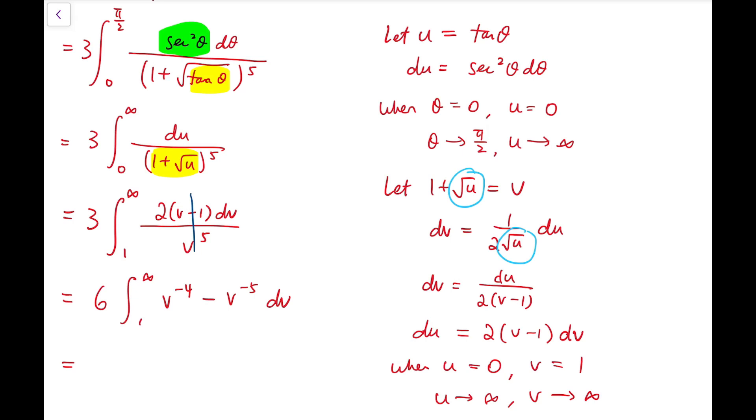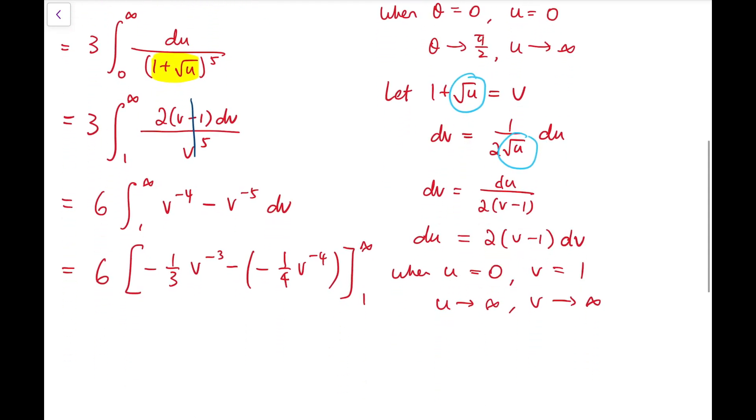So, integrating, I have this integral to become 6 times [(-1/3)v^(-3) - (-1/4)v^(-4)]. And then, I'm going to put our upper and lower limits inside this integrated function. When v tends to infinity, both v^(-3) and v^(-4) will tend to 0. So, we can simply say, if we put the upper limit inside, we will have 0.